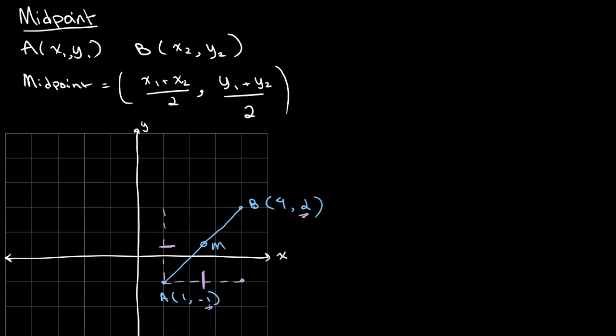To find the point halfway in between, we add the two values together and divide by 2. For the x value, we get 4 plus 1 divided by 2, which gives us 5 over 2, equal to 2.5. This is our x value.